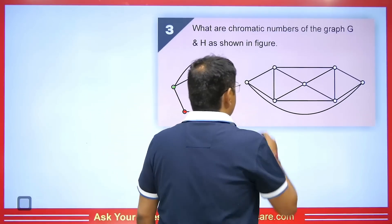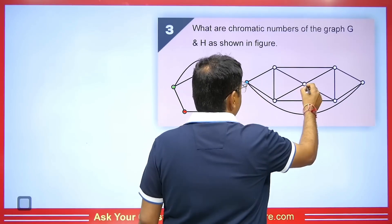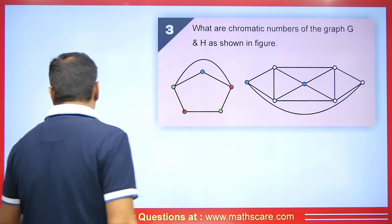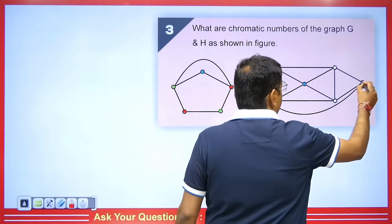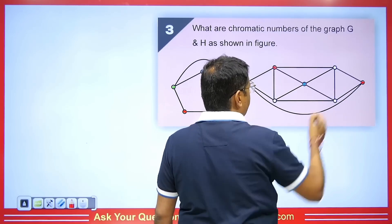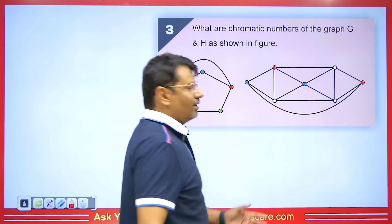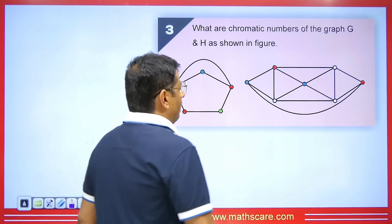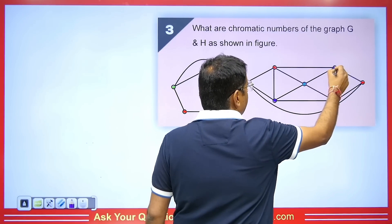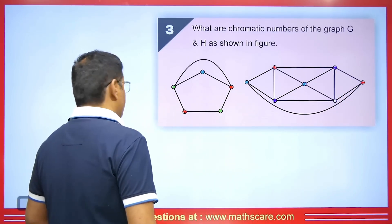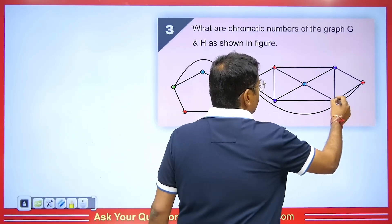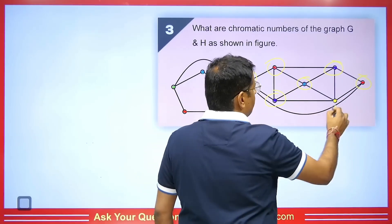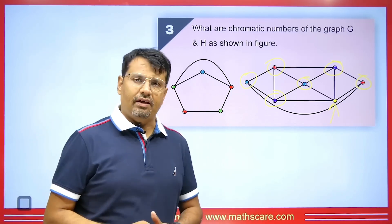For graph H, I use a particular color for non-connected vertices covering three of them. Then I take red for non-adjacent vertices. Next I take purple for another pair of non-adjacent vertices. Finally, I need yellow as a fourth color. I start with one color, move to two, then three, and finally four — giving us a chromatic number of four, making it a four chromatic graph.